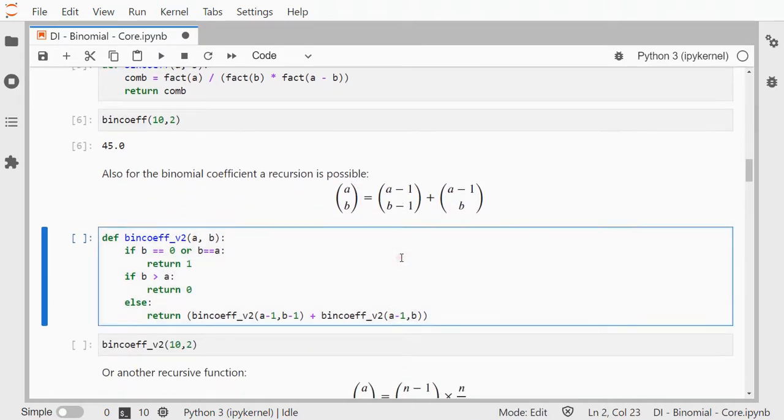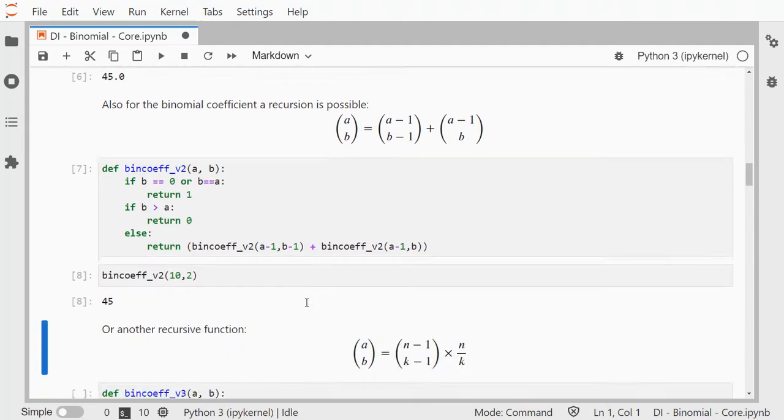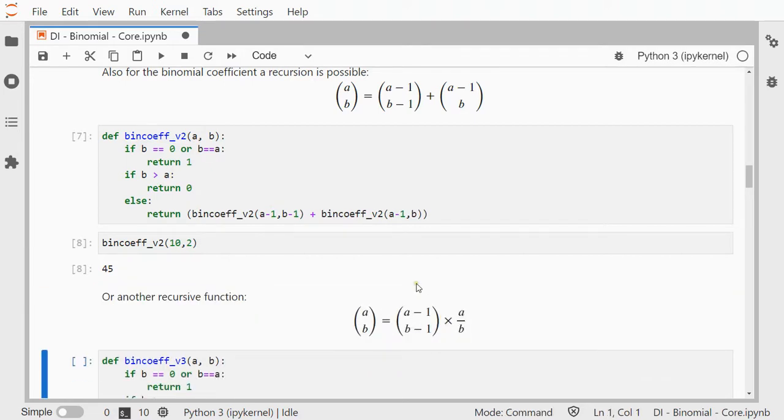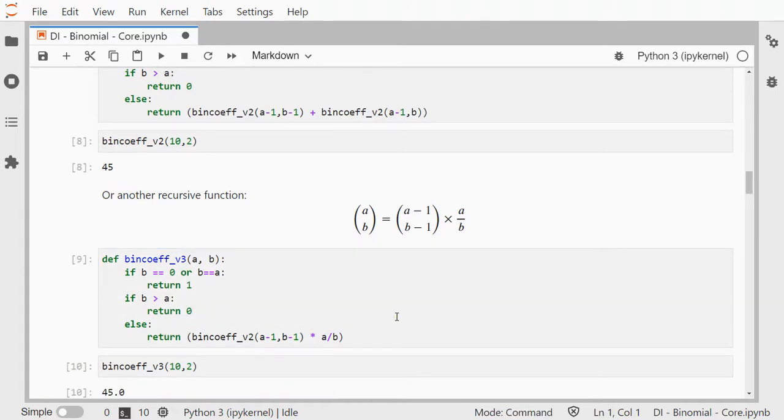All right, so I can use that one as well, and of course it gives the same result, also 45. There's another one, that is a and b, and that's also recursive, same result in the end, also 45.